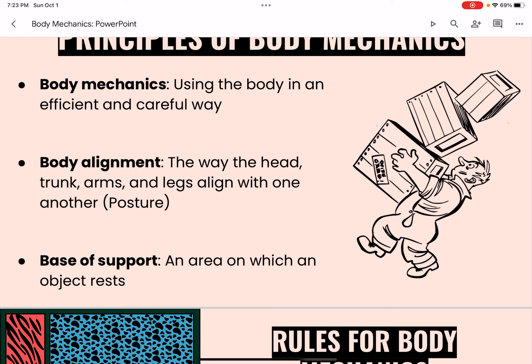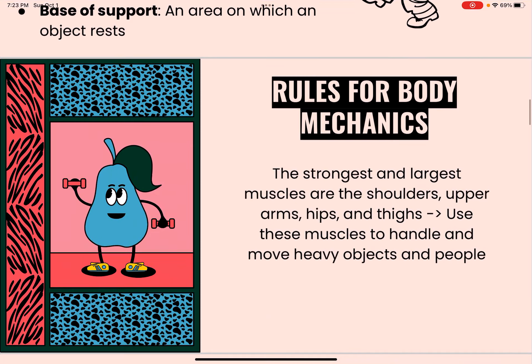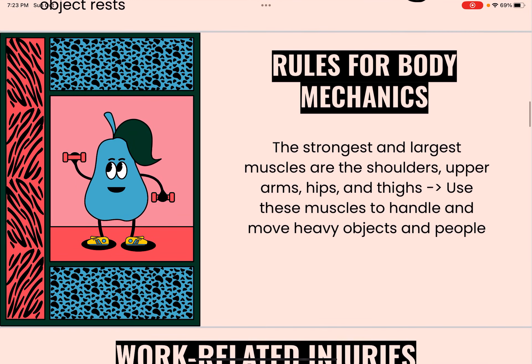The term base of support refers to the area on which an object rests. A good base of support is needed for balance. The strongest and largest muscles are the shoulders, upper arms, hips, and thighs. Individuals should use these muscles to handle and move heavy objects and people.